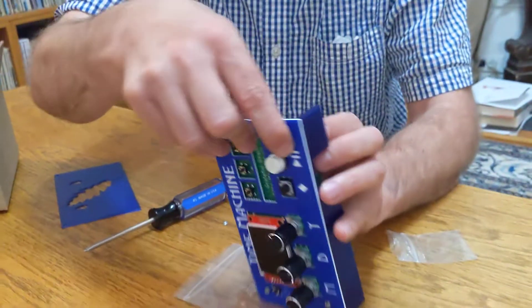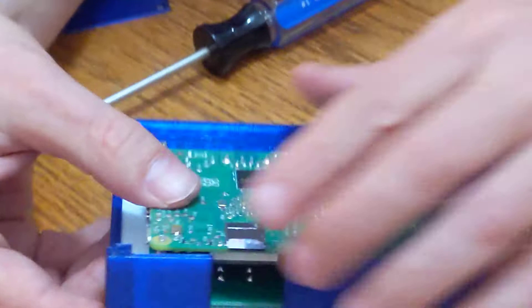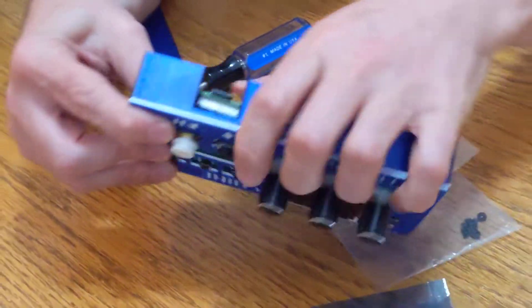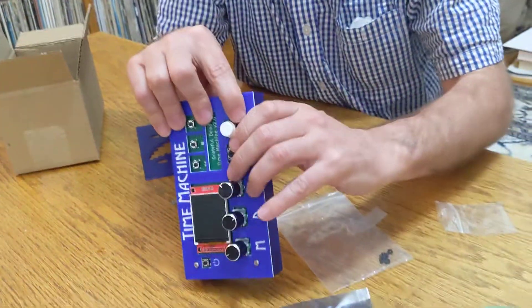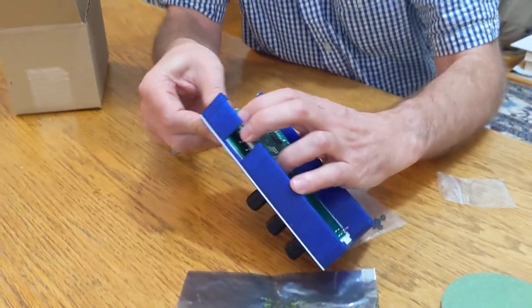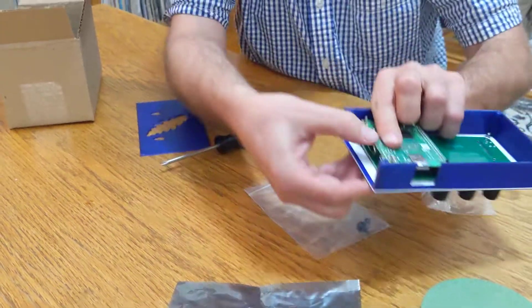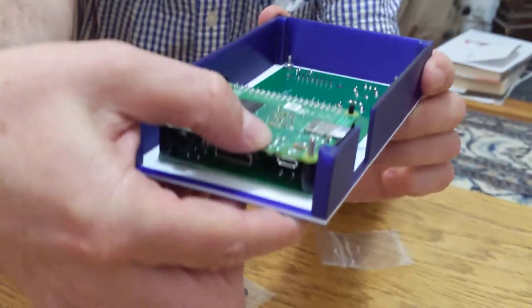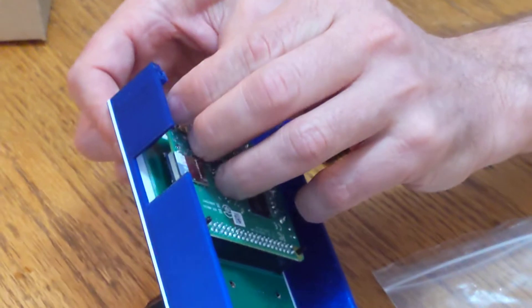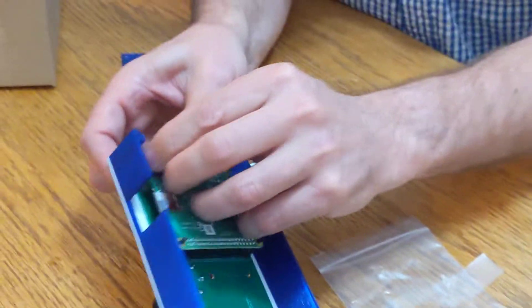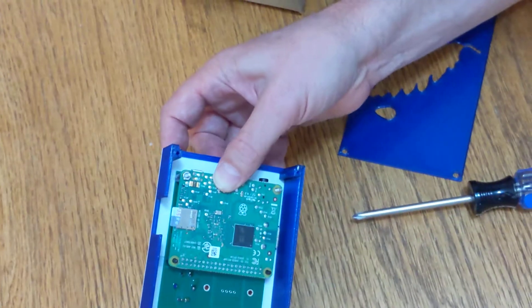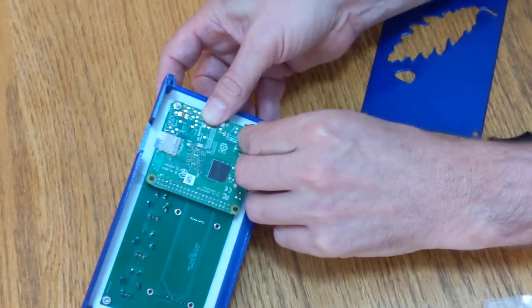Now, notice I'm holding these screws in place so they don't fall out. Basically there, just press it. Get the standoffs there so the Raspberry Pi plugs in. And then I take these two nuts, put them back on to the Raspberry Pi like so. I'll get this other one started just so that the screw doesn't fall out.